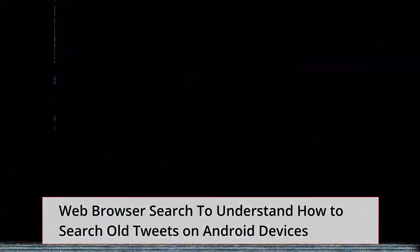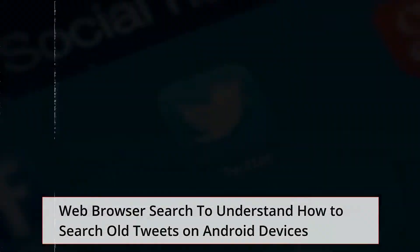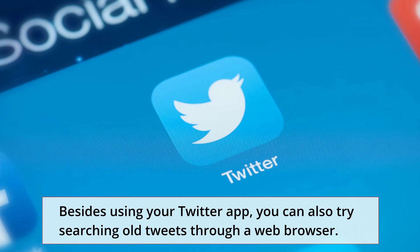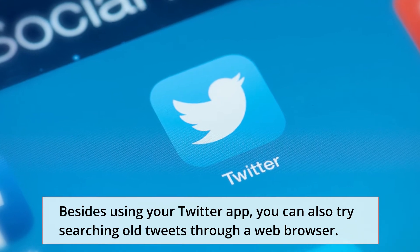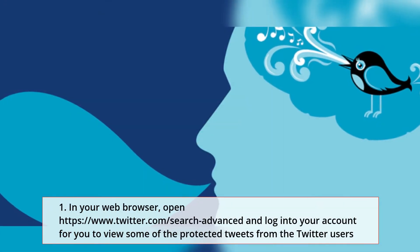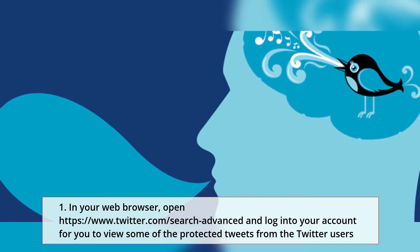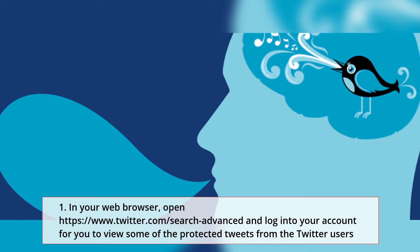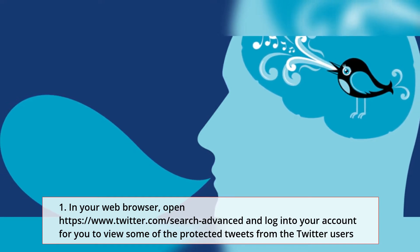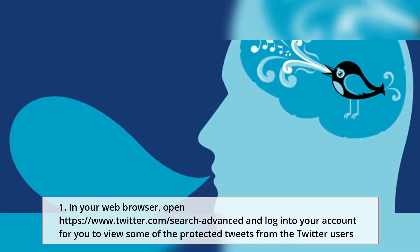Web browser search: to understand how to search old tweets on Android devices, besides using your Twitter app, you can also try searching old tweets through a web browser. Step 1: In your web browser, open https://www.twitter.com/search-advanced and log into your account to view protected tweets from the Twitter users you are following.